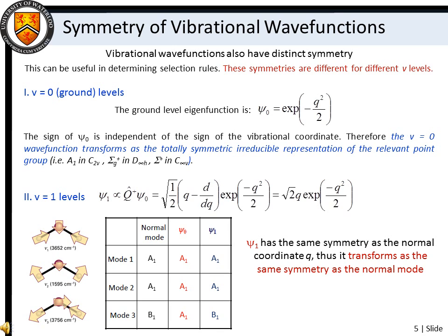Vibrational wave functions are also described by symmetry, and we can use the symmetry properties of wave functions to deduce whether or not a vibrational transition is possible. For example, the ground state vibrational wave function is e to the minus 1 half q squared. Here, q is the vibrational normal mode coordinate, and we see that the symmetry of the wave function is independent of its sign. Thus, the v equals 0 wave function transforms as the totally symmetric irreducible representation of the relevant point group.